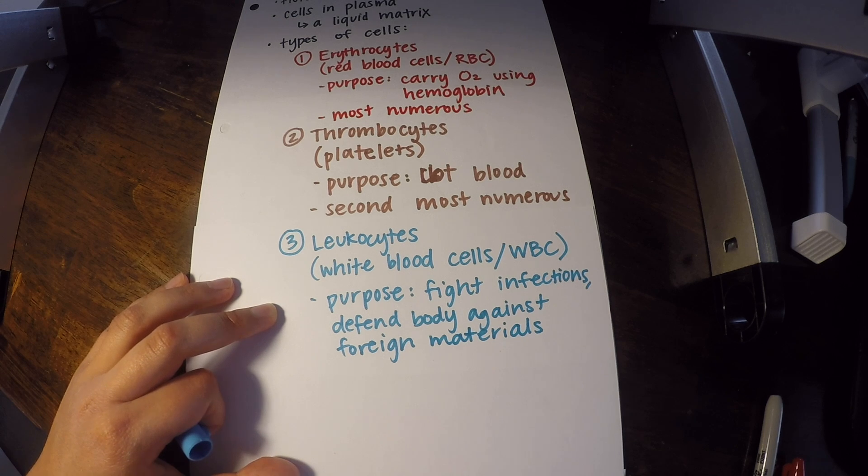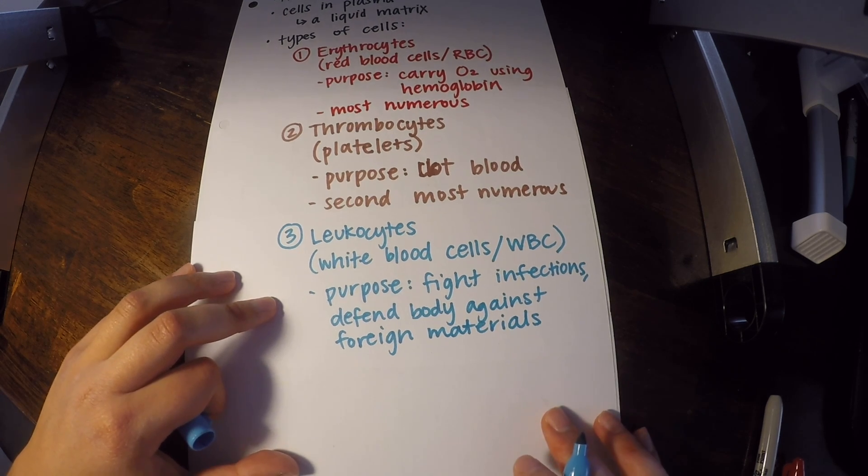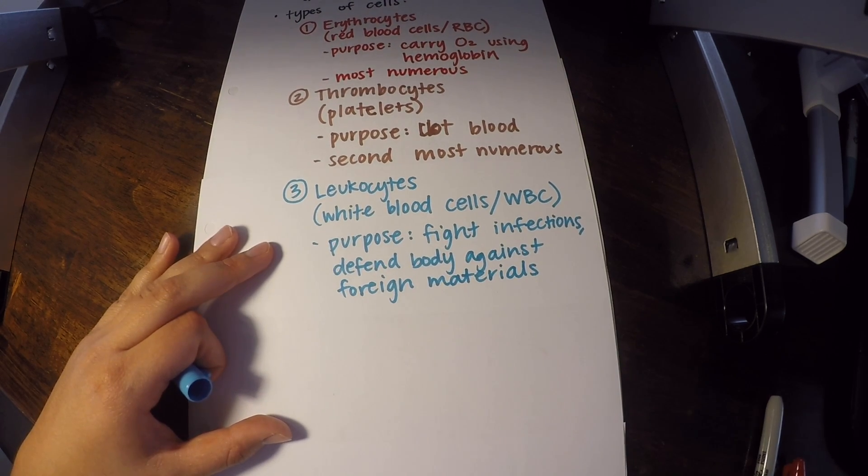Now, leukocytes are a little bit more complex than the other types of blood cells, just because there are a bunch of different types. So we're going to talk about the five different types.